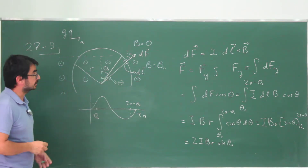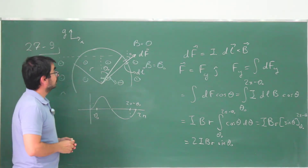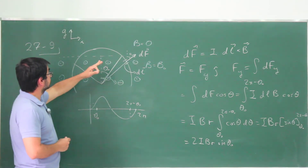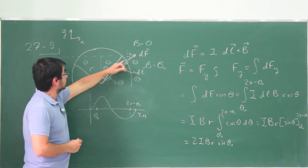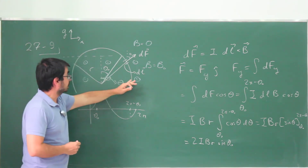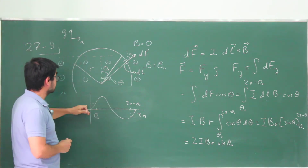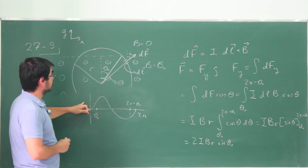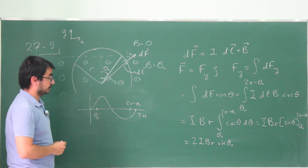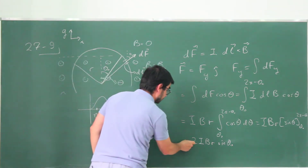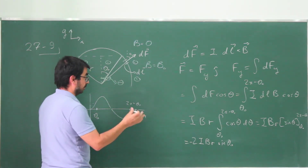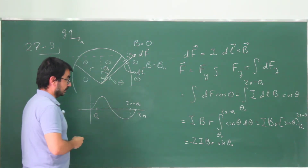There is a negative sign, but that doesn't matter because we already know the direction — the horizontal components cancel out, the only part that doesn't get cancelled is the circular arc inside the field, and the force for that is going to be just in the negative y-direction. The y-component magnitude is given by 2iBr·sinθ₀.